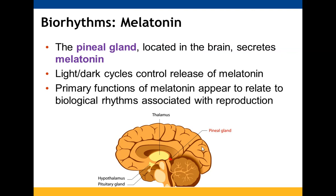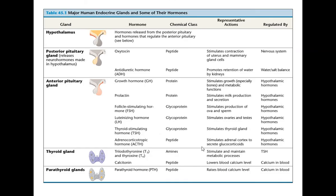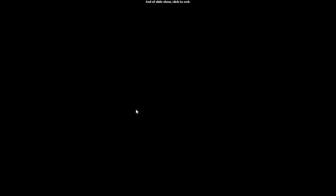Biorhythms: the pineal gland, a tiny structure in the brain, secretes melatonin and is controlled by light and dark cycles. Its functions appear to be related to rhythms associated with reproduction. This concludes the summary of all the hormones covered in this chapter.